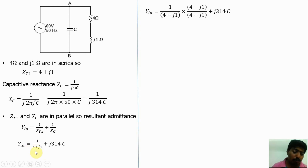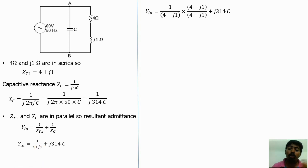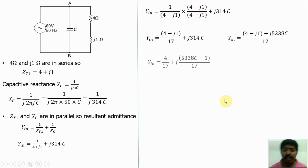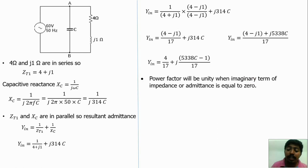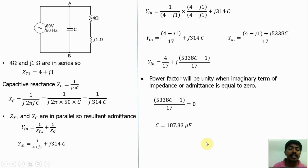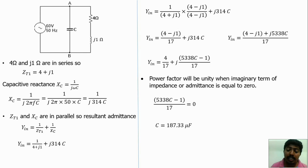In this part, the denominator has an imaginary term. To eliminate this, multiply the complex conjugate on both numerator and denominator. Simplifying this equation further, we now calculate the capacitance value by equating the imaginary part to zero, because the power factor of the circuit is unity when the imaginary part of impedance or admittance equals zero. Solving, the capacitance value C equals 187.33 microfarads. If C equals 187.33 microfarads is added, the imaginary part of the admittance will be zero and the power factor will be unity.